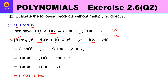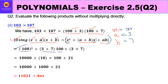Looking at our factors — 100 plus 3 and 100 plus 7 — and comparing with Identity 5, we can identify x = 100, a = 3, and b = 7. Now applying the identity, the product is x² + (a + b)x + ab, so we substitute: 100², then (3 + 7) × 100, then 3 × 7.